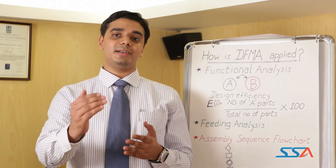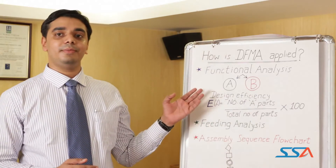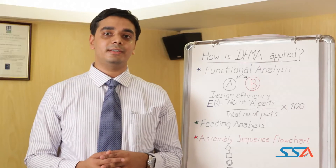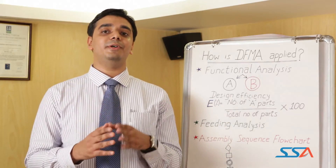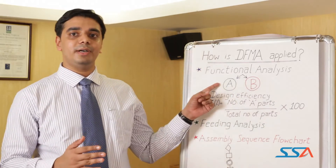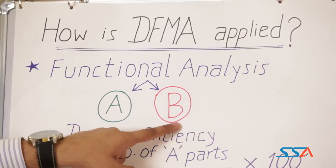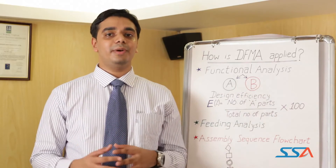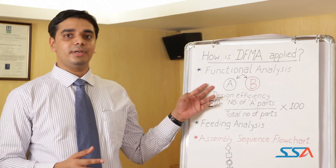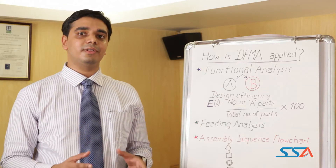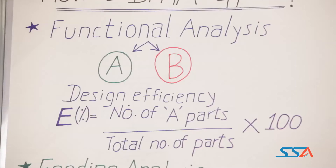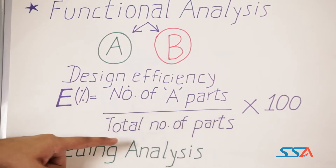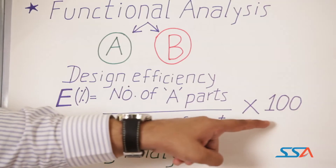DFMA is applied in a structured approach. The first step is to carry out a functional analysis of the product. Components are classified into primary components (A) or secondary components (B). B components are those which can be eliminated or combined with their mating part, while A components are those which are primarily needed for the product assembly. Design efficiency is then calculated as the number of A components divided by the total number of parts, multiplied by 100.